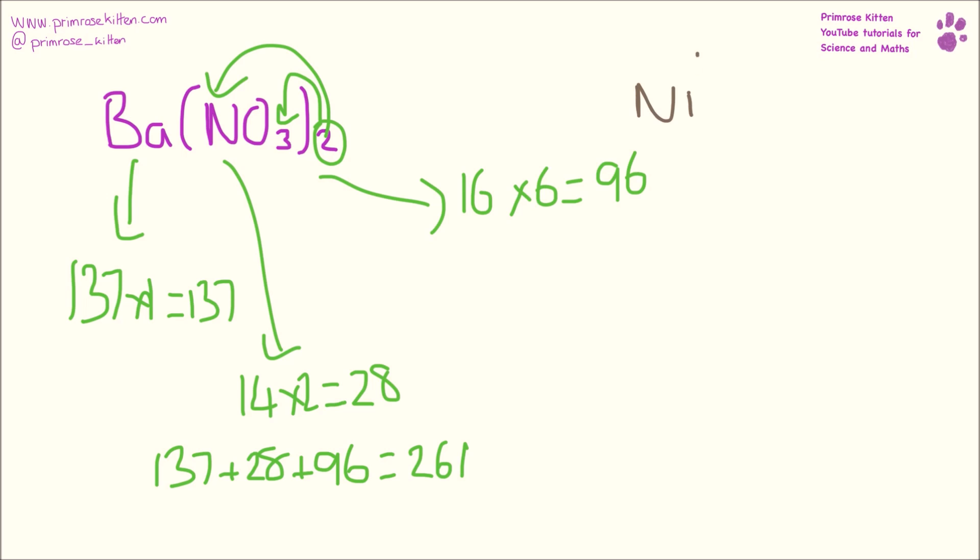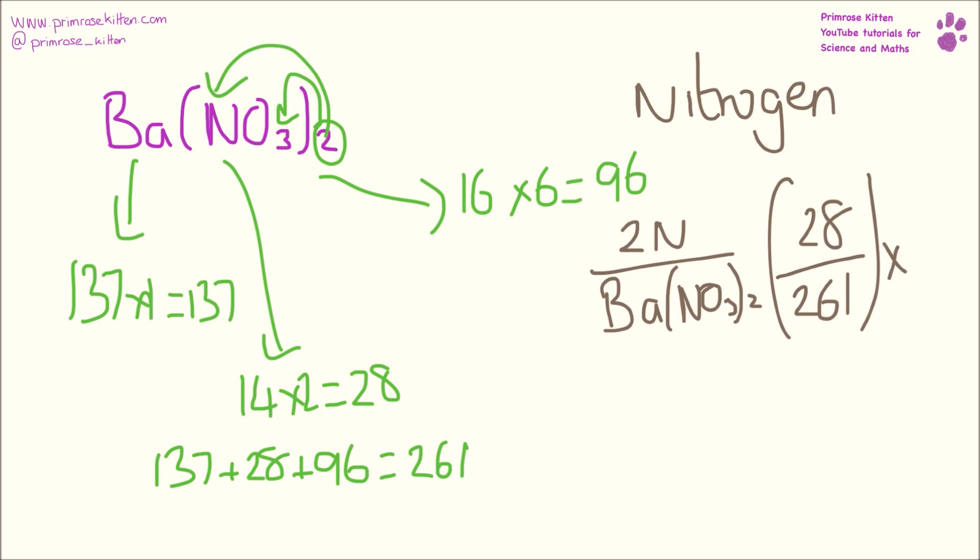Here I want you to find the total mass of nitrogen. Now we have two nitrogens, and that is divided by the total, which gives us 28 over 261 times 100, giving us 11%.